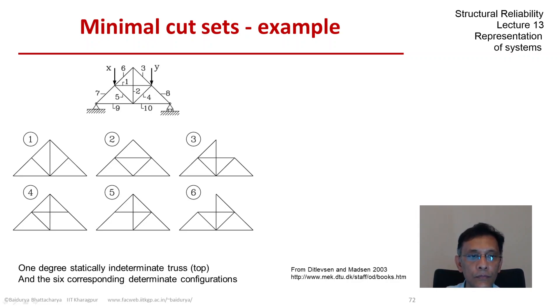So let's identify the minimal cut sets. Obviously, seven, eight, nine, and ten each would be a minimal cut set because if they fail, then the structure becomes unstable, the whole structure.